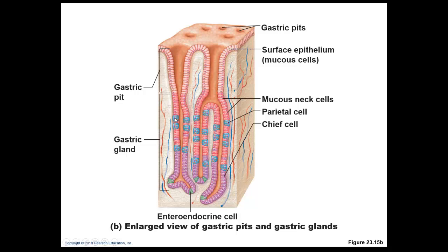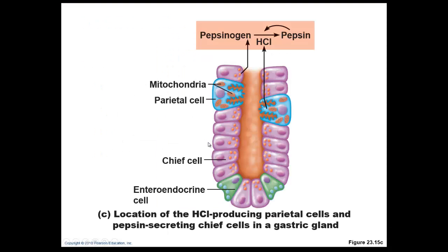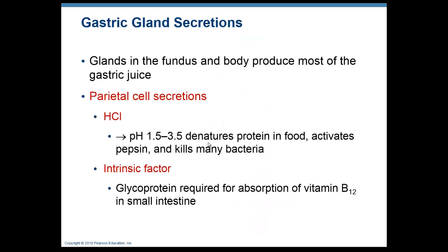Scattered among these are parietal cells, which produce hydrochloric acid and intrinsic factor. Hydrochloric acid helps break down protein, activates pepsin for protein digestion, and kills bacteria that cannot survive in an acidic environment. Intrinsic factor is a hormone required for the absorption of vitamin B12, which is needed to make red blood cells. Without intrinsic factor, you lack vitamin B12 and develop pernicious anemia due to the inability to manufacture red blood cells.